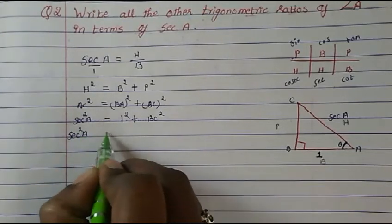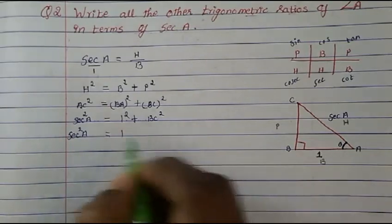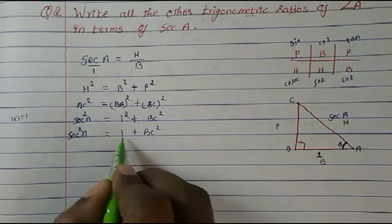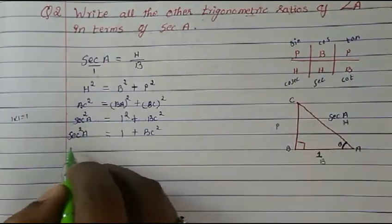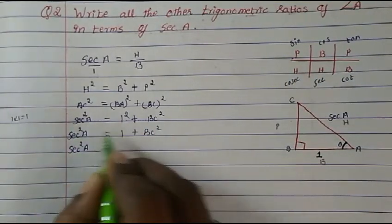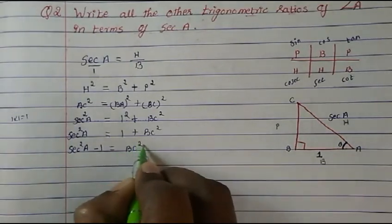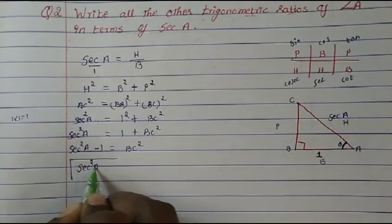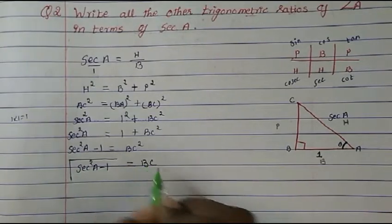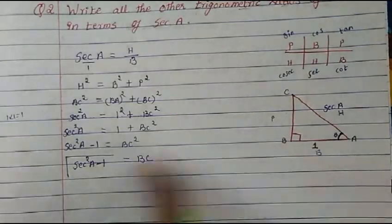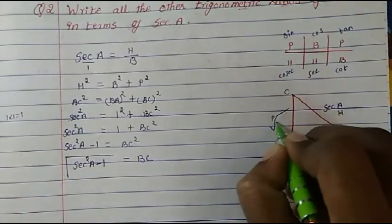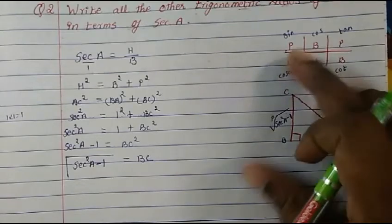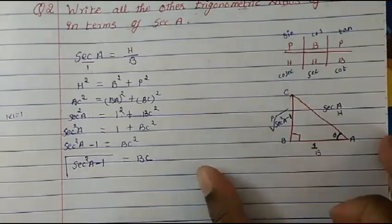1 squared is 1, so sec²A = 1 + BC². Bringing 1 to the other side: BC² = sec²A − 1. Taking the square root: BC = √(sec²A − 1). So our perpendicular value is √(sec²A − 1). Now we know all three values: perpendicular, base, and hypotenuse.